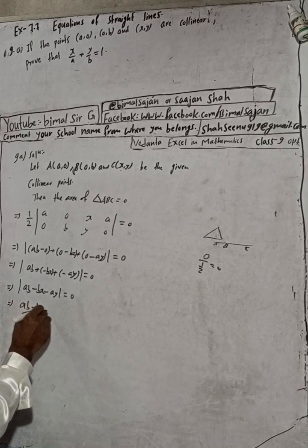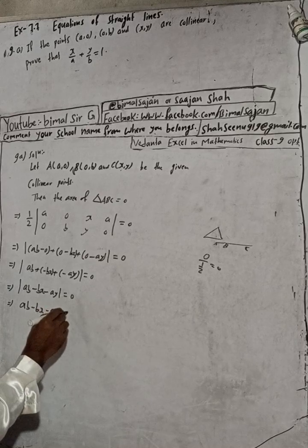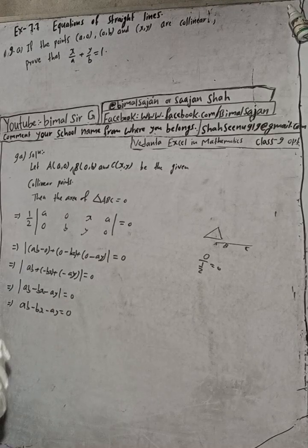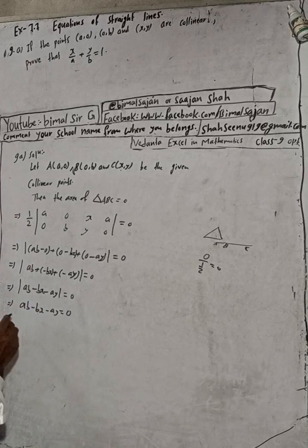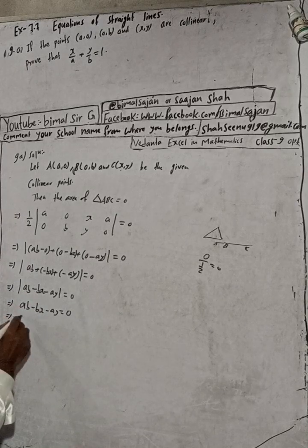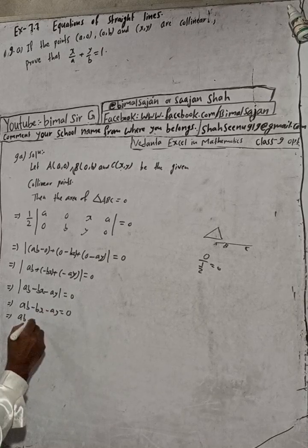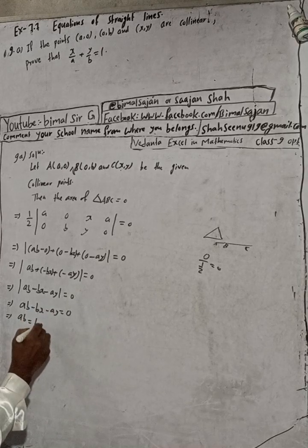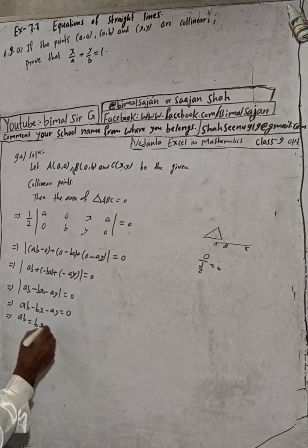So ab minus bx minus ay equals zero. That means we can rearrange: ab equals bx plus ay, moving the terms to the right-hand side.